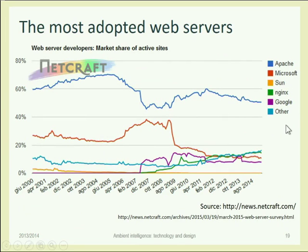Web servers can be standard software — they don't need to understand anything about your specific website. They just handle files over the HTTP protocol. So a web server is a standard component; all websites in the world have the same type of functionality from a web server. The most used web server is the Apache server, which is an open source project. If you want updated statistics about which web servers are most used, you can go to a dedicated website with a lot of nice information.